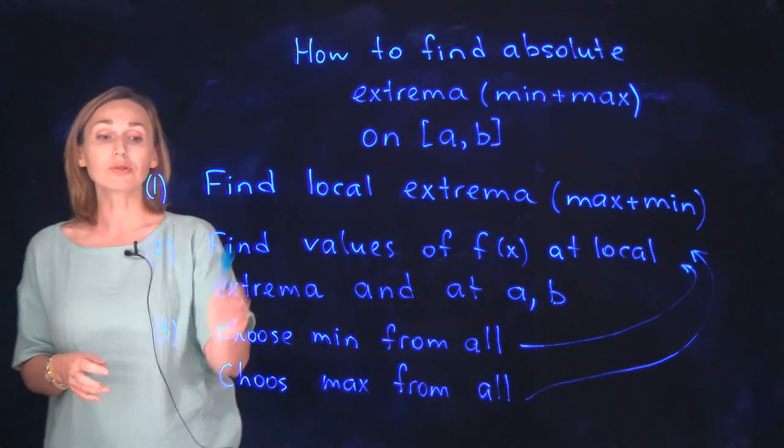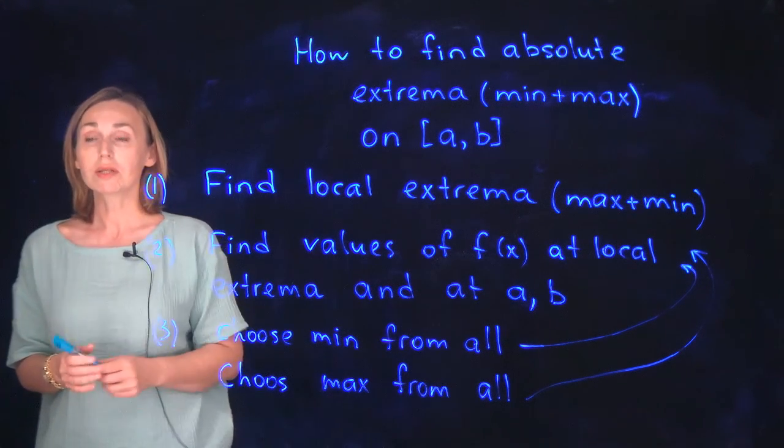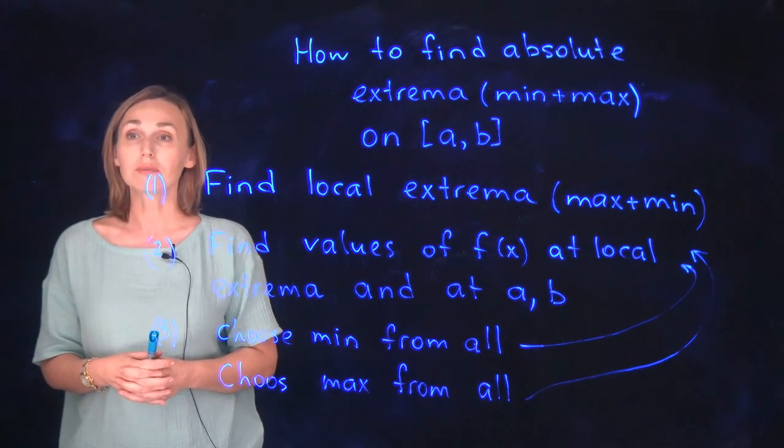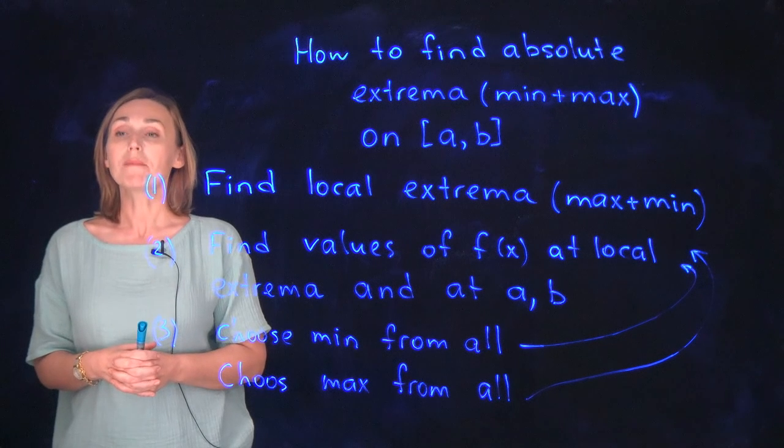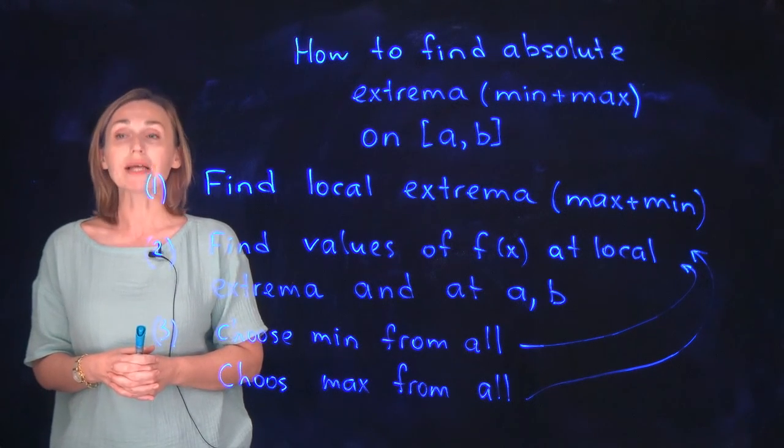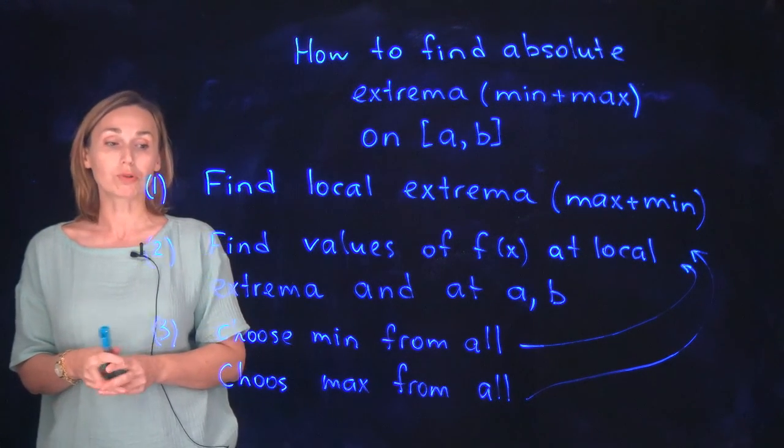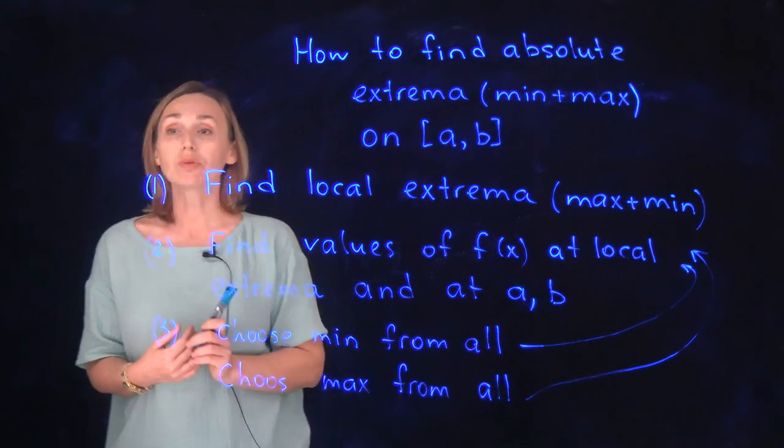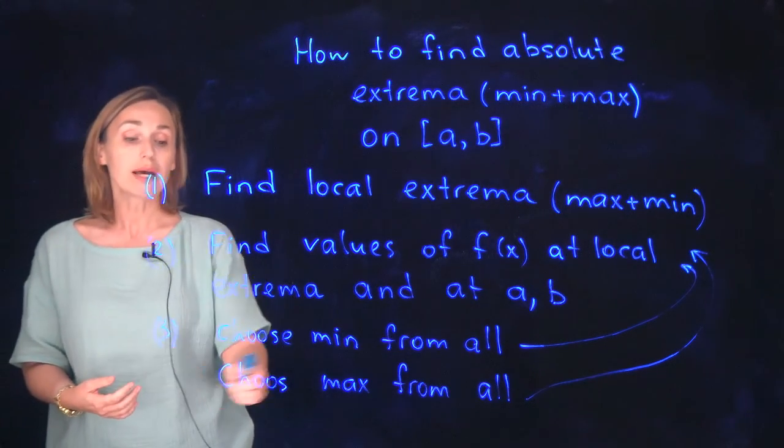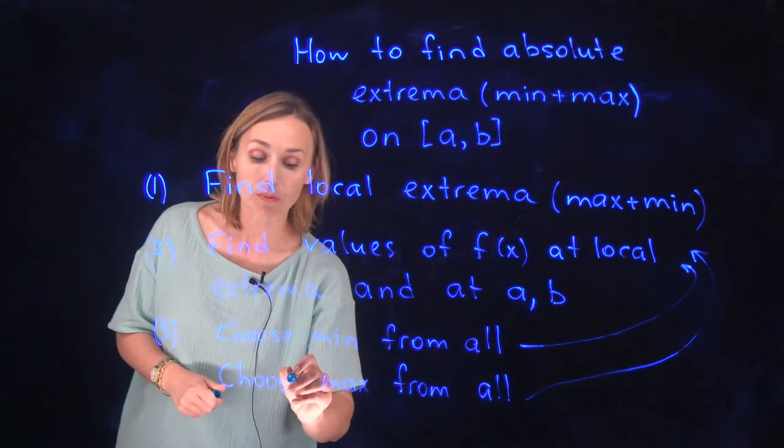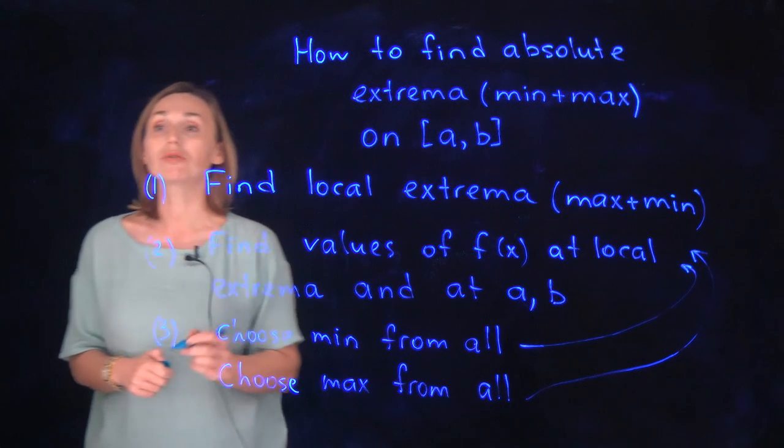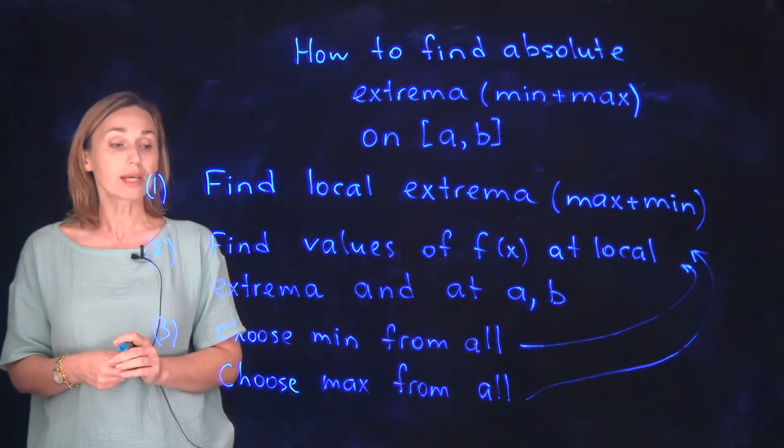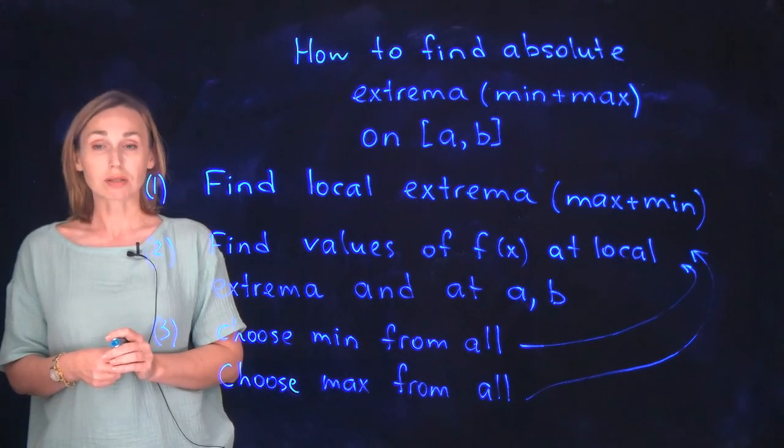After that you compare these values that you've got on step 2, and you pick maximum out of all of them and you pick minimum out of all of them. So you choose minimum out of those values and you will get absolute minimum, and then you choose maximum out of all the values and you will get absolute maximum.